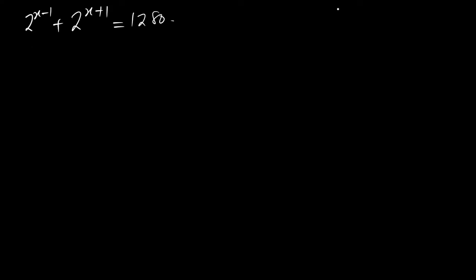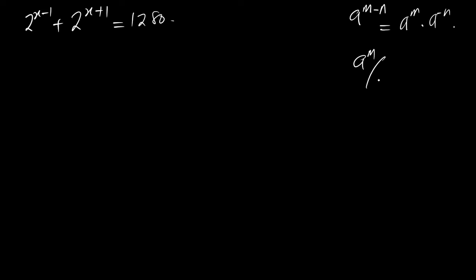Now, according to the law of indices, you have a raised to the power m minus n. This is the same thing as a raised to the power m times a raised to the power negative n, which is also the same as a raised to the power m divided by a raised to the power n. It's the same thing.